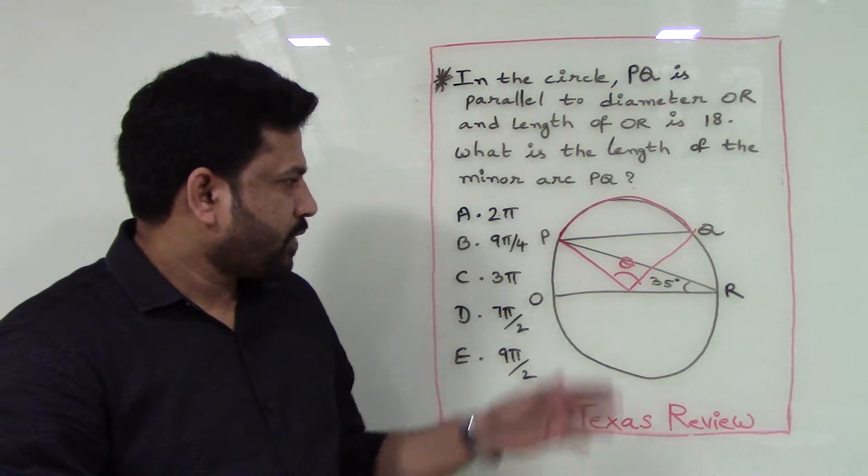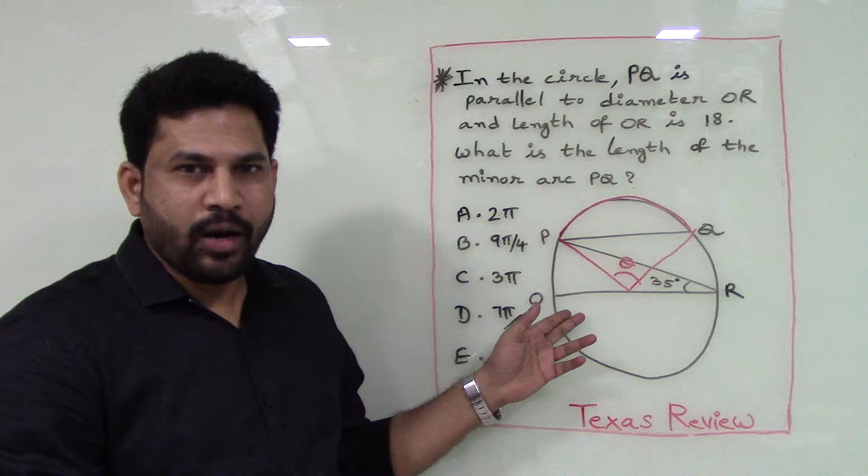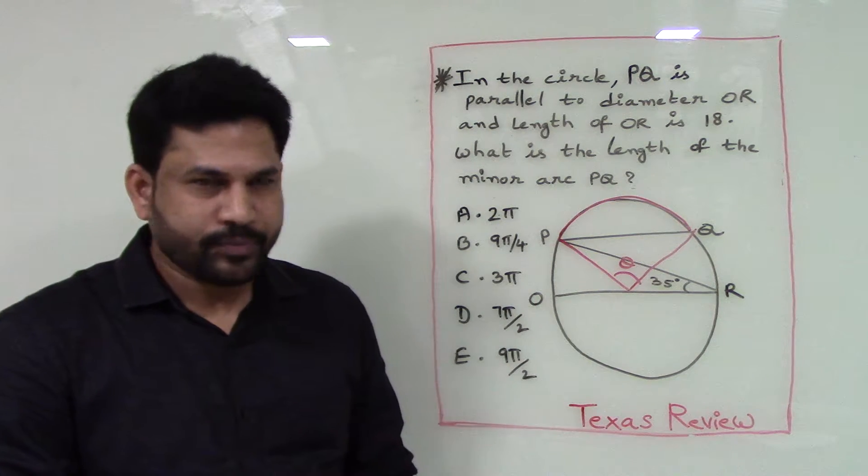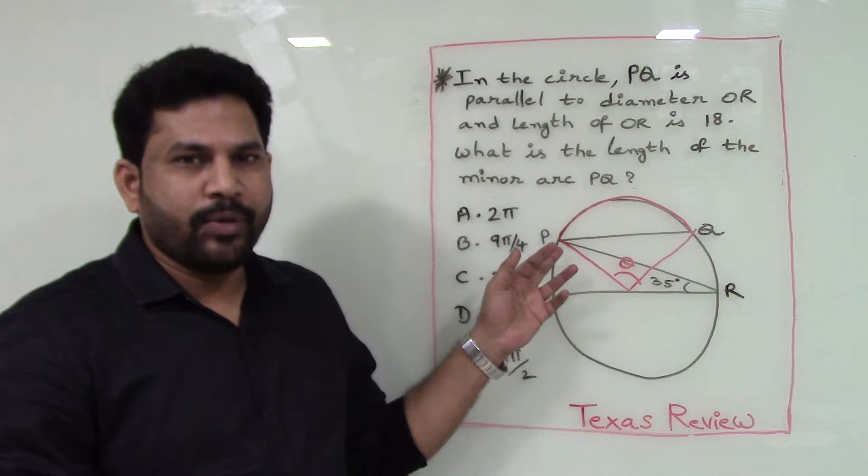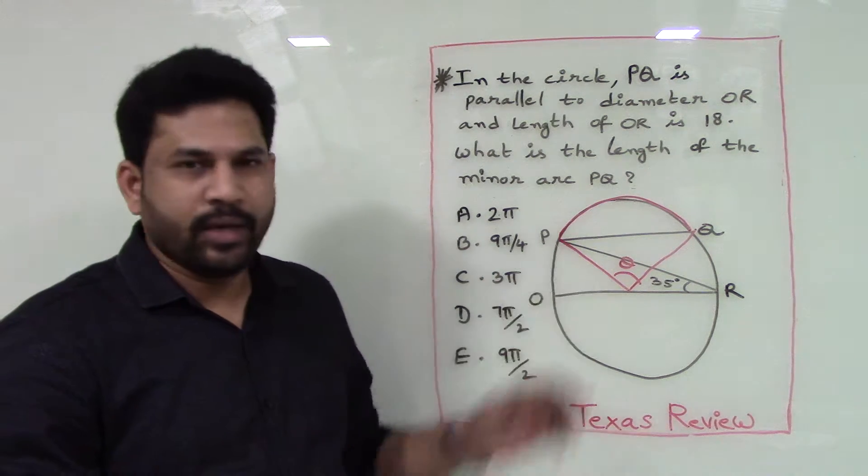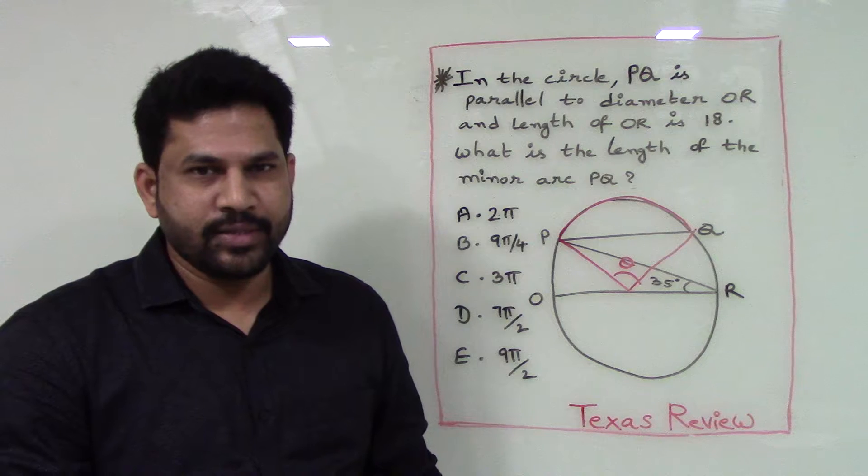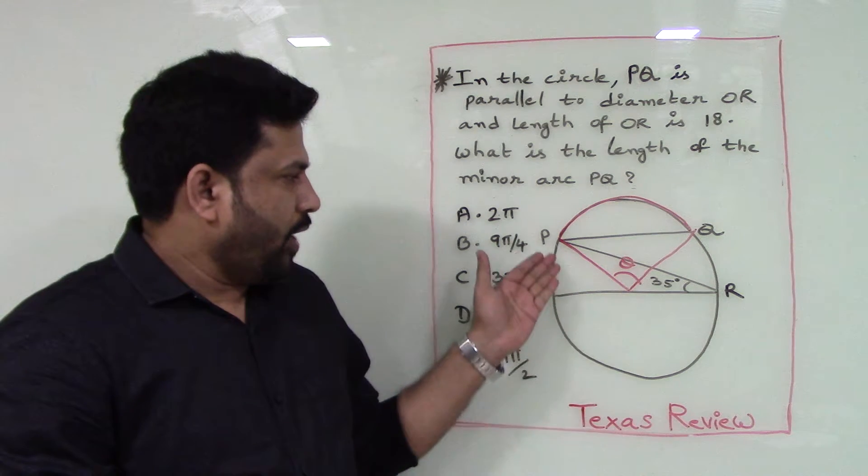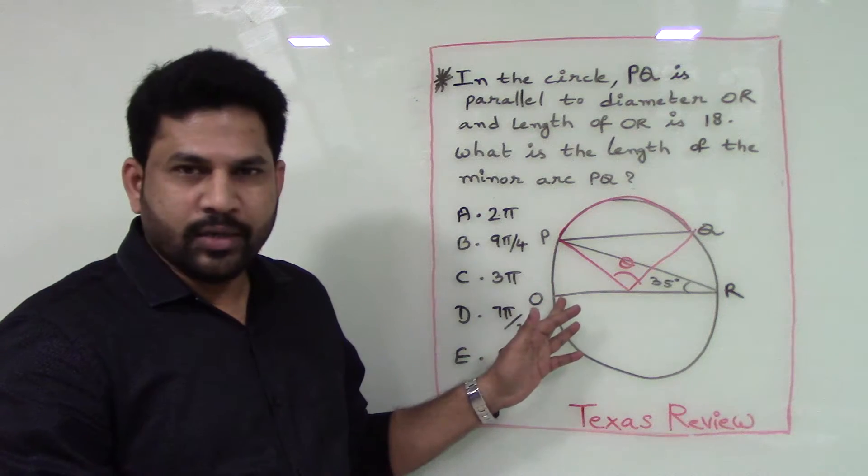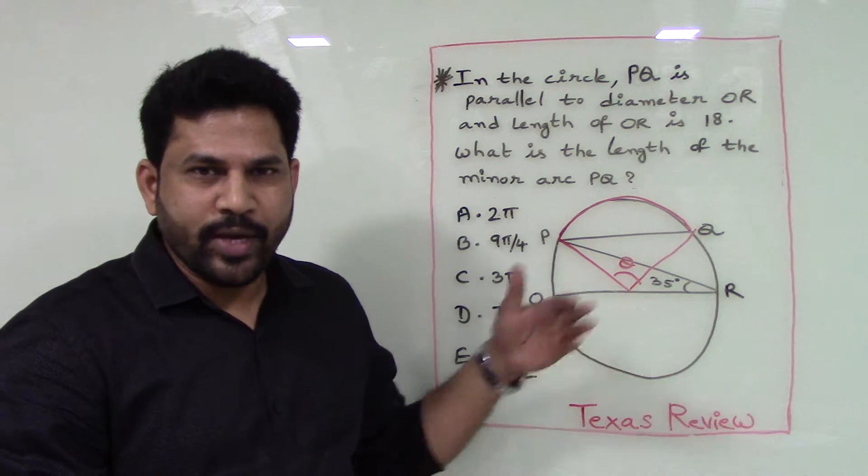We are given PQ is parallel to OR and OR is 18 units. We are also given the angle made by arc OP at R is 35 degrees. So the angle made by an arc at the center is twice the angle made by the same arc at any point on the circle.